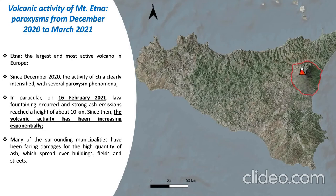Etna, as you will know, it's the most active volcano in Europe. Since last December, the activity increased a lot, especially with several paroxysm phenomena. I took the 16th February event where there was a lot of emissions, ash emissions, and also lava. From this event, the volcanic activity increased even more.